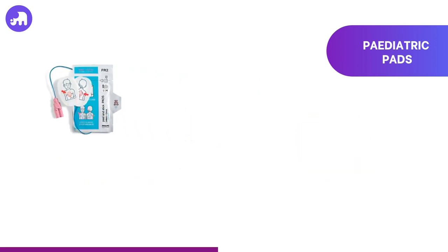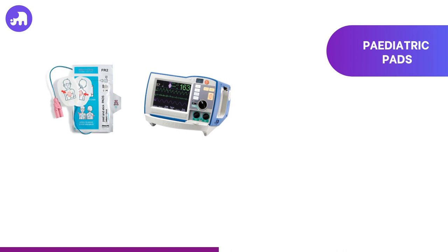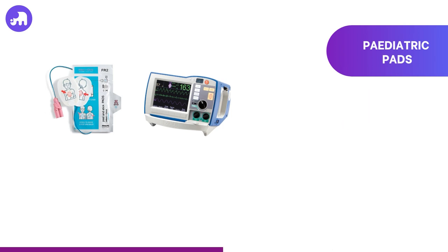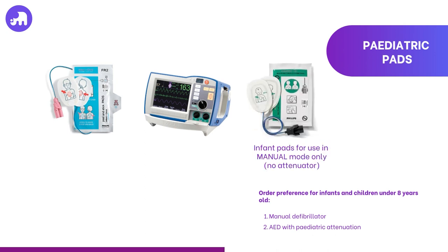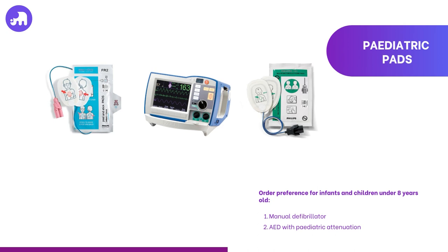Manual defibrillators are the first choice for infants and children due to the ability to titrate or adjust the amount of energy delivered depending on the patient's size and needs. In situations where a manual defibrillator is not immediately available, follow local policy and procedures. In children over eight years, in the absence of a manual defibrillator, an AED can be used as their physiology is closer to adults. For infants and children under eight years, the order of preference is: firstly a manual defibrillator; if unavailable, an AED with paediatric attenuation; and lastly, if neither is accessible, a standard AED may be used with caution, understanding it is not the optimal choice for this age group.